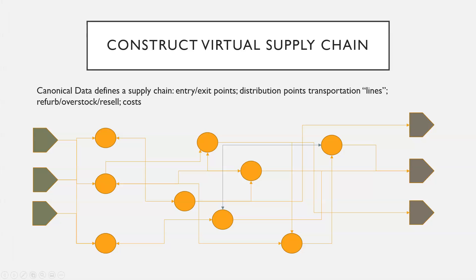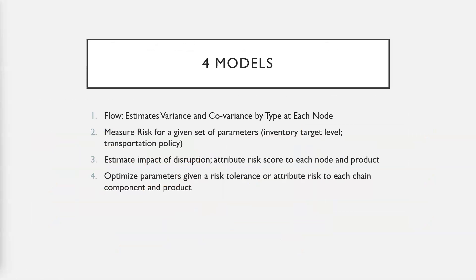With a virtual supply chain network we can estimate flow at the intermediate nodes, at the source, and at the endpoints. We can measure risk, and from that we can estimate the impact of a disruption and attribute risk to each node — each component of the supply chain.